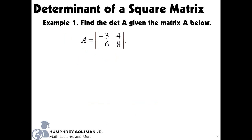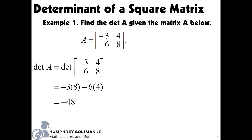Let's have an example. Example number 1: Find the determinant A given the matrix A below. The solution is we will multiply negative 3 times 8, minus 6 times 4. That would be negative 24 minus 24. The answer is negative 48.